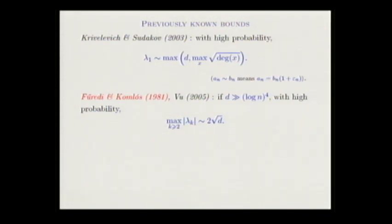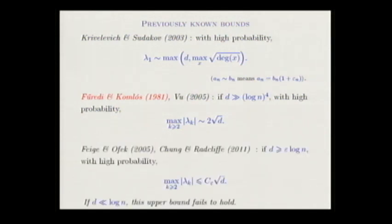When the degree is much larger than log n to the fourth, the second largest eigenvalue has random matrix scaling — it behaves like 2 times square root of d. I put the Furedi–Komlós paper on the right because essentially all I'm going to discuss are consequences of ideas in that paper. When not covered by that, we only knew that as soon as the degree is at least log n, you have, up to a constant factor, the random matrix scaling — a result by Feige and Ofek.